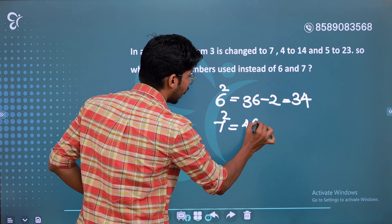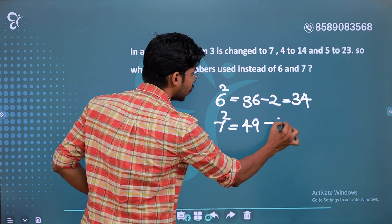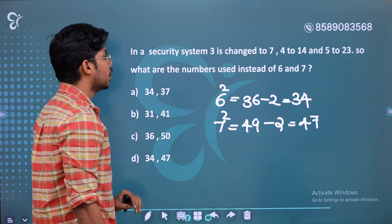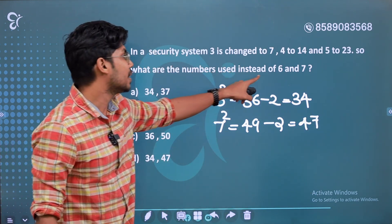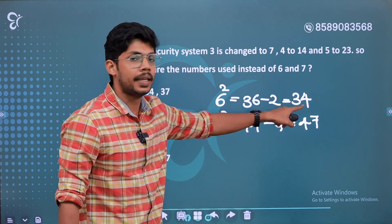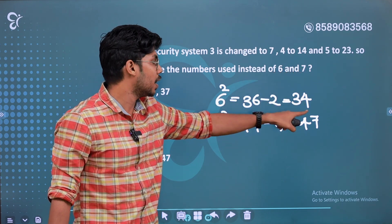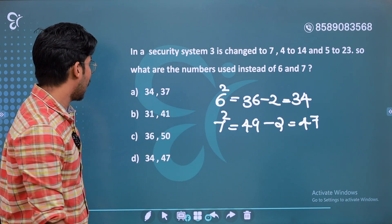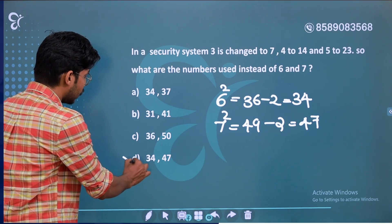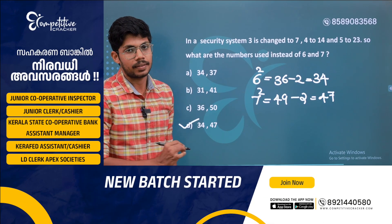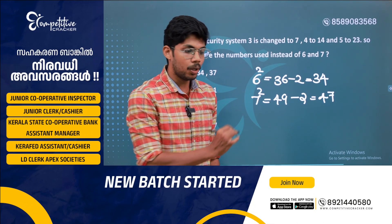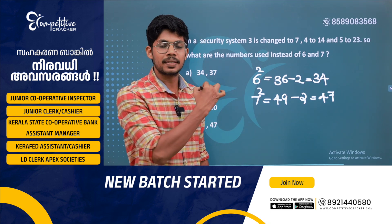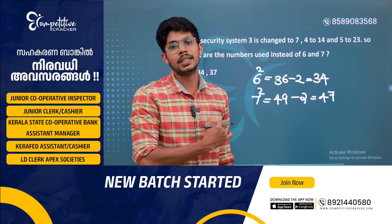So for 6: 6 squared is 36, minus 2 equals 34. For 7: 7 squared is 49, minus 2 equals 47. The answer is Option D — 34 and 47. This is a coding-decoding logic question.